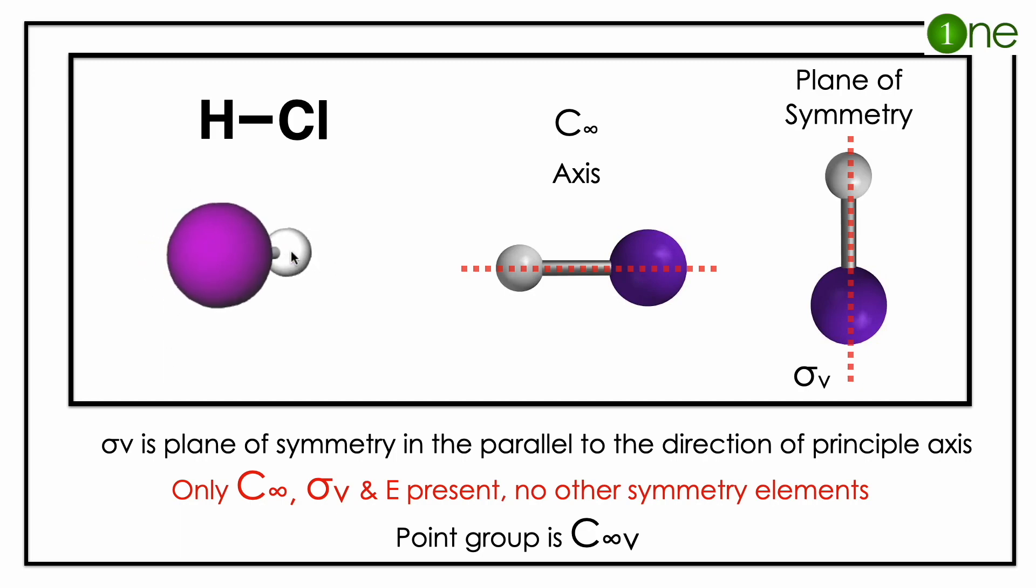For every heteroatomic molecule, the point group is C infinity v. The C infinity axis is along the bond. For every degree of rotation, you will get the same molecule again and again.